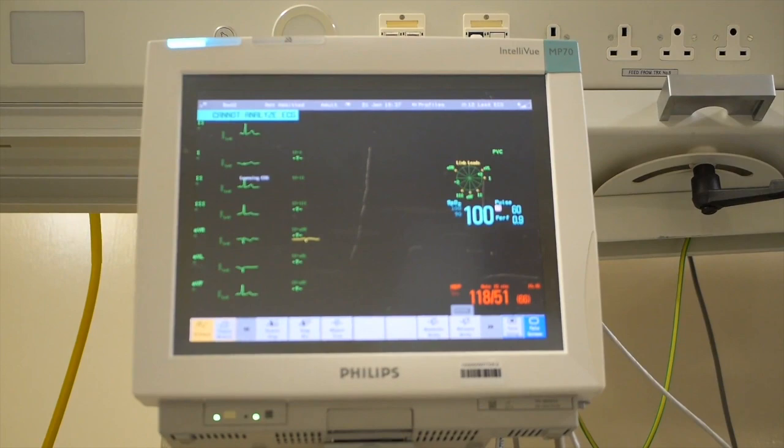Let's discuss the schematic diagram of the ventilator. Mechanical Ventilator Milano, or MVM, consists of a small number of components. It has a medical care flow meter for direct regulation of the maximum flow rate, an oxygen therapy humidifier, a non-vented non-invasive ventilation mask, two electrically controlled VDC actuated pneumatic valves, a pressure sensor, a control system directly connected to the pneumatic valves and the pressure sensor, and a backup VDC battery connected to the control system.